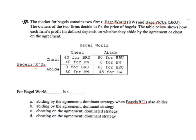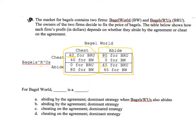Notice that from Bagels R Us's point of view, if it thinks Bagel World is going to cheat, Bagels R Us's best play is to cheat too. And likewise, if Bagels R Us thinks Bagel World is going to abide by the agreement, notice that Bagels R Us's best play is to cheat as well.